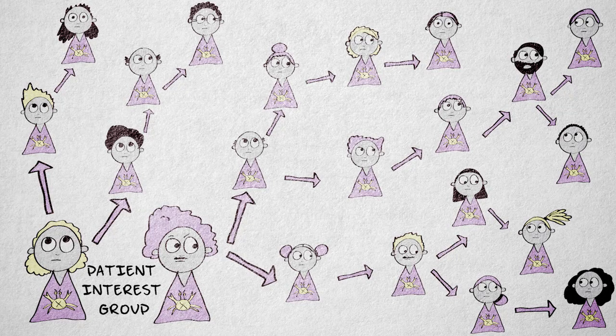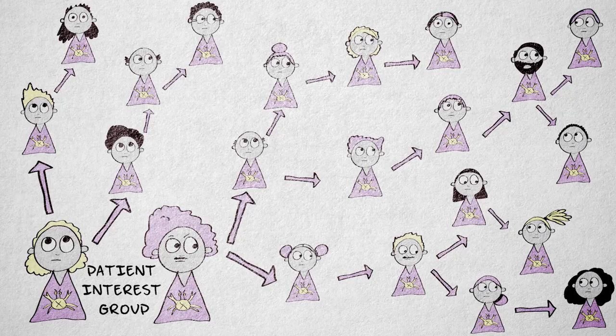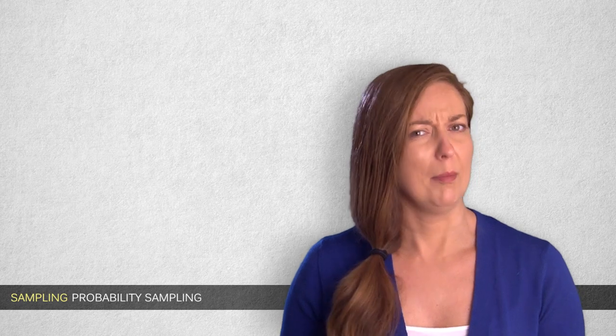Snowball sampling is very useful for hard-to-reach, closed-community populations. Of course, all disadvantages of convenience sampling also apply to snowball sampling, maybe even more so, because there's the added risk that we're selecting a clique of friends, colleagues, or acquaintances. These people could share characteristics that differ systematically from others in the population.